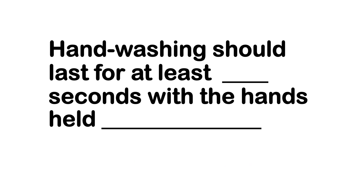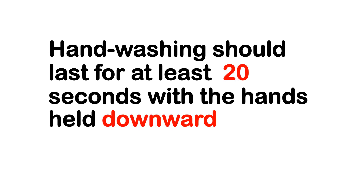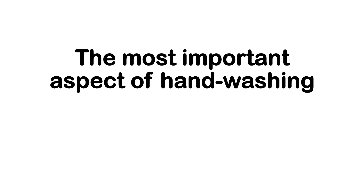Handwashing should last for how many seconds, with the hands held in what direction? Handwashing should last for at least 20 seconds with the hands held downward. To keep track of 20 seconds, hum or sing the happy birthday song two times. What is the most important aspect of handwashing? There are three aspects: water, soap, and friction. The most important is friction because it dislodges the microorganisms from the hands.